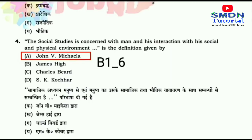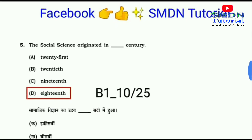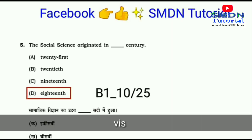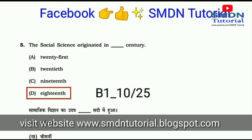Question number five: The social sciences originated in the DASH century. Options: 21st, 28th, 19th, 18th. This is covered in the last chapter of Block 1. The answer is that social science originated in the 18th century.